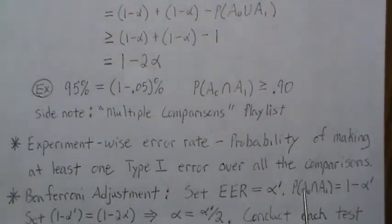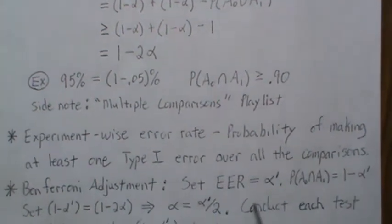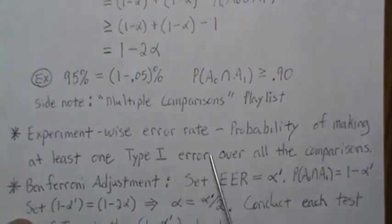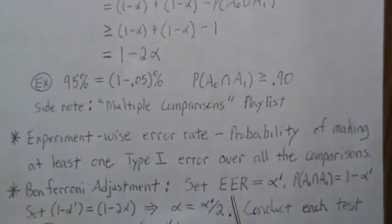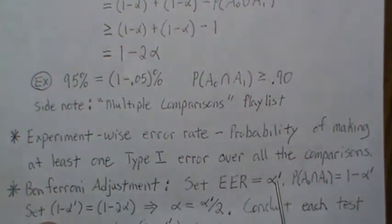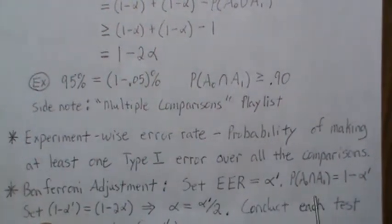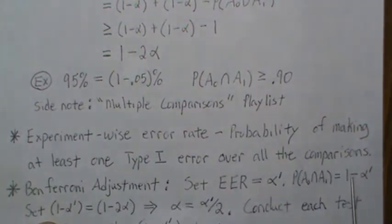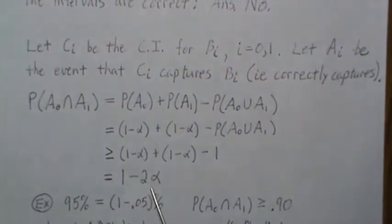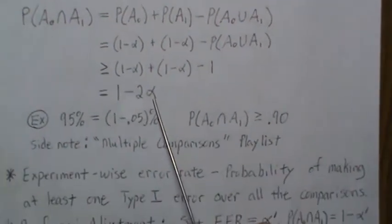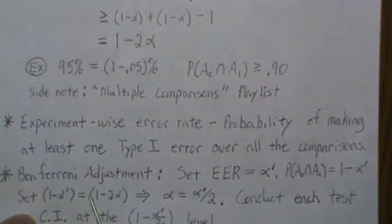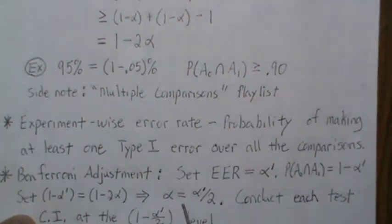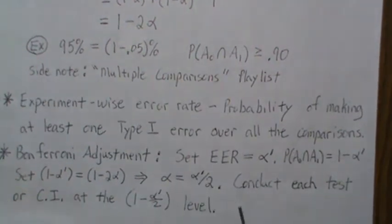Now the Bonferroni adjustment tries to maintain this type one error rate. The idea is this: we want to set the experiment-wise error rate at some level, say alpha prime. We want the joint probability that both intervals are correct to be one minus alpha prime. Notice it's at least this in the worst case scenario. If we set the worst case scenario to what we want and back solve for alpha, that says alpha equals alpha prime over two.